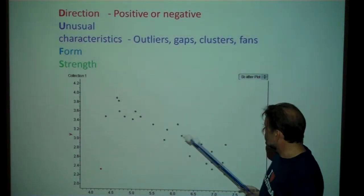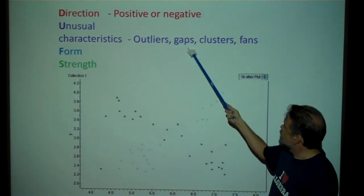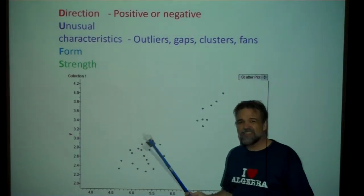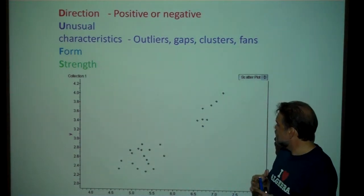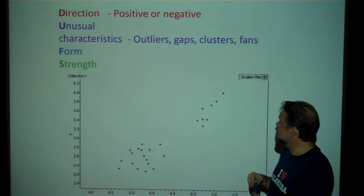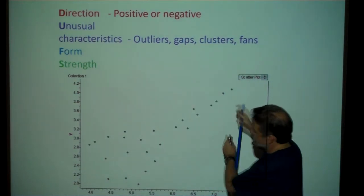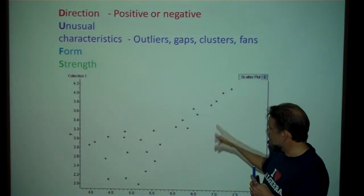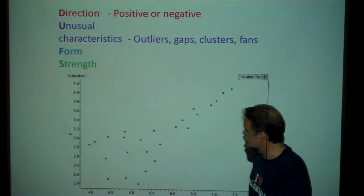By unusual characteristics, one of them is an outlier — a point that certainly doesn't fit the pattern of the rest of the data. You might also have gaps or clusters, forming two different clusters of data. This is like seeing bimodal or multimodal data in univariate data — you'd say, I think I might possibly have two different populations here, and it might make more sense to split them up and analyze them independently. You also sometimes get scatter plots that fan out, where the greater the value of your explanatory variable, the greater the standard deviation of your response variable.